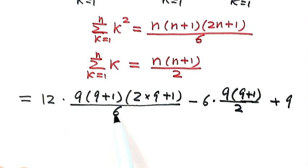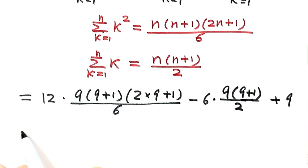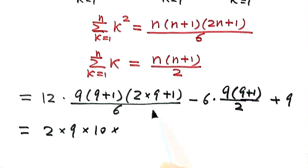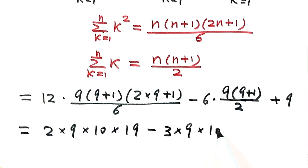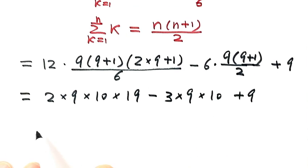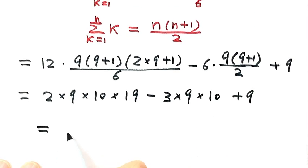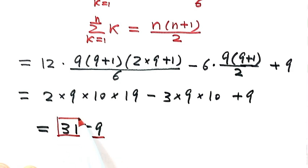Simplifying: the 6 and 12 cancel to give 2×9×10×19, and the 2 and 6 cancel to give 3×9×10, plus 9. Computing: 2×9×10×19 minus 3×9×10 plus 9 equals 3,159. So that is the answer for this question. Thanks for watching.